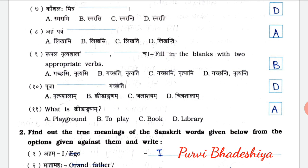Ninth: Ruppal Nruthyasala blank — fill in the blanks with two appropriate verbs. The answer is B, Gachati and Nruthyati. Ten: Pooja blank Gachati — the answer is Chitrashala. And eleventh: what is Pridanganam? The answer is A, Playground.